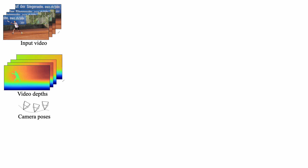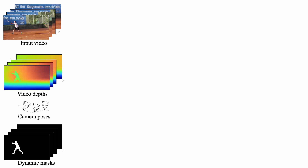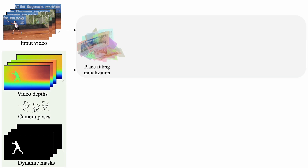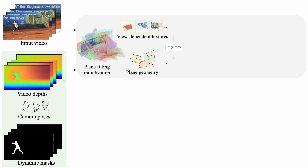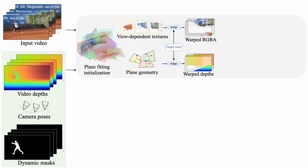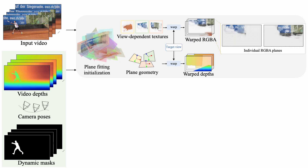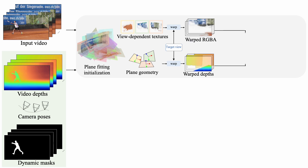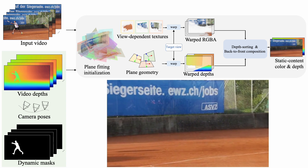Here is how. Given an input video, we first estimate the dense video depth and camera poses using off-the-shelf methods. Our idea is to model the static scene components using a collection of 3D planes, represented by view-dependent textures and planar geometry. Given an arbitrary target viewpoint, we can render the color and depth images with back-to-front composition of the warped 3D planes.